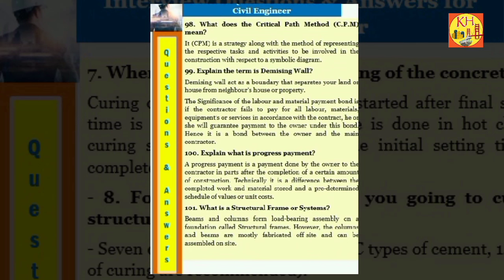Question 98: What does the critical path method (CPM) mean? CPM is a strategy along with the method of representing the respective tasks and activities to be involved in the construction with respect to a symbolic diagram. Question 99: Explain the term demising wall. Demising wall act as a boundary that separates your land or house from neighbor's house or property. Question 100: The significance of the labor and material payment bond is if the contractor fails to pay for all labor, materials, equipments or services in accordance with the contract, he or she will guarantee payment to the owner under this bond. Hence it is a bond between the owner and the main contractor.